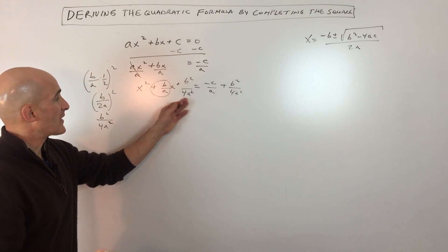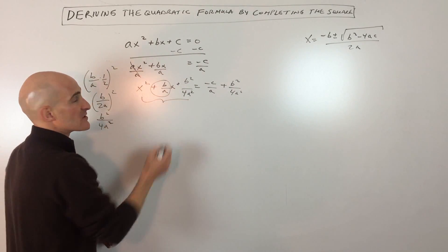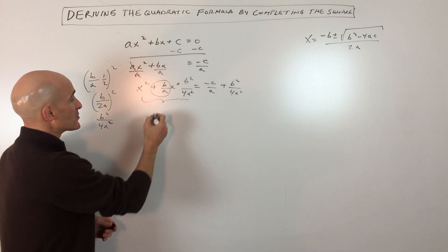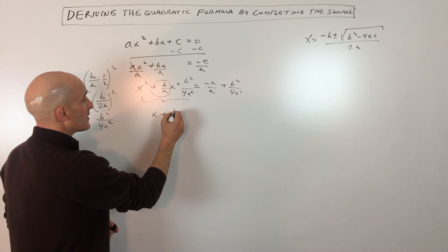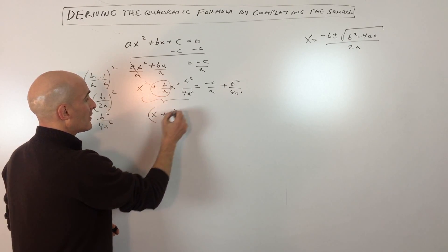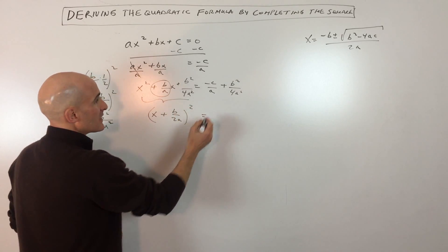So now what we're going to do is factor this trinomial. And the way we've set it up is it's going to be a perfect square. So it's going to be x plus b over 2a, the quantity squared, equals,